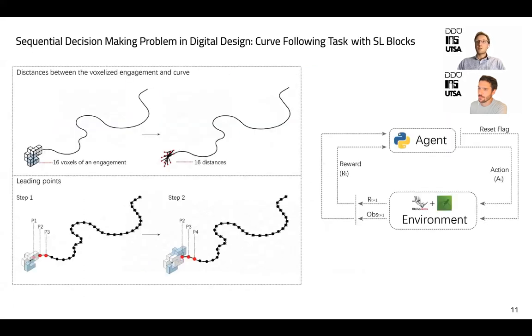In order to frame the problem of sequential assembly with the SL blocks as a reinforcement learning problem, we need to create an environment in Grasshopper with which the learning agent can interact by sending actions and receiving observations and rewards, as shown in the diagram on the right.